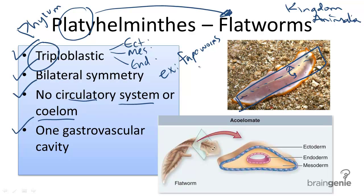In evolutionary terms, flatworms are the most primitive of the bilaterally symmetric animals, but they remain more complex than sponges and cnidarians.